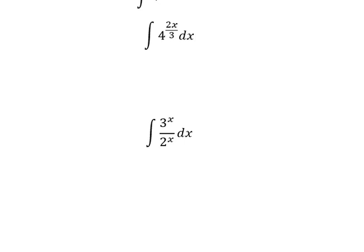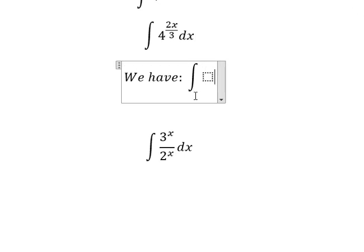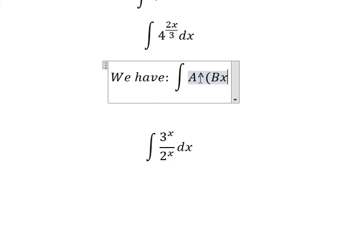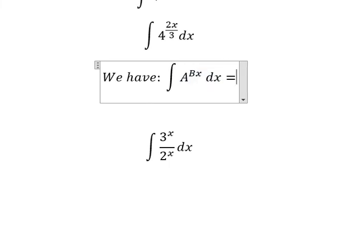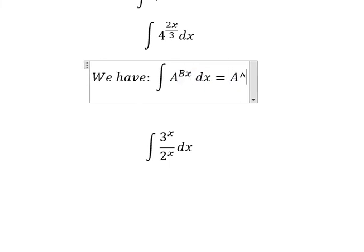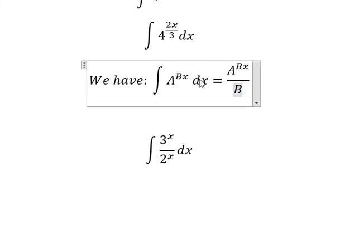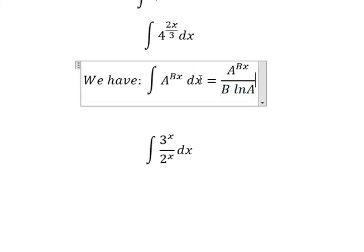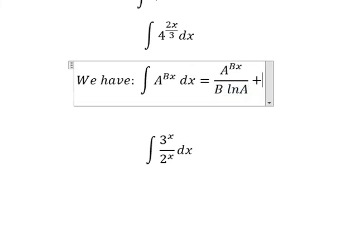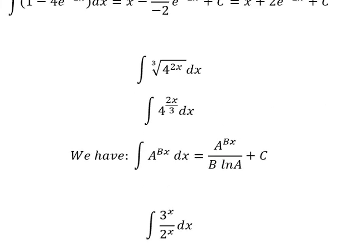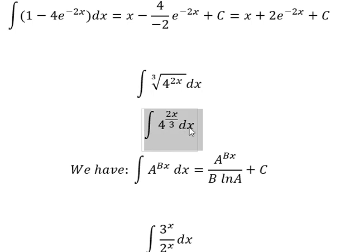Now we have the formula: the integral of a to the power of b·s ds equals a to the power of b·s over b times ln(a), and then we add c. Now we can apply the formula here.